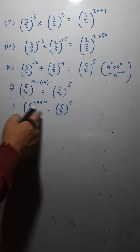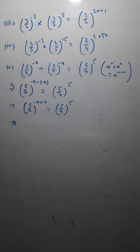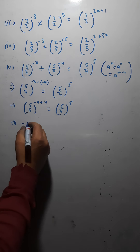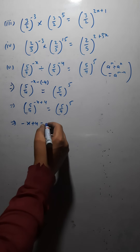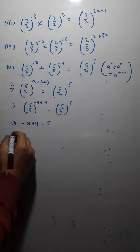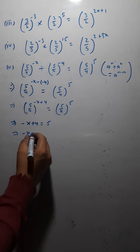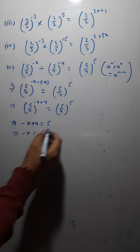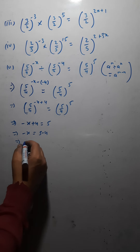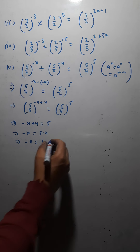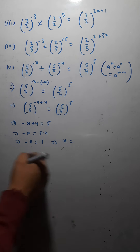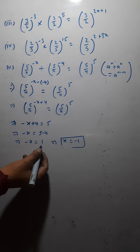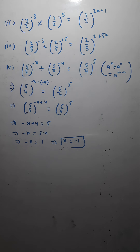Now again, since the bases are the same, you can equate the exponents. So minus x plus 4 equals 5. Minus x remains here, 4 goes to the other side — its sign is plus so it becomes minus there. So minus x equals 5 minus 4, which gives minus x equals 1, so x equals minus 1.